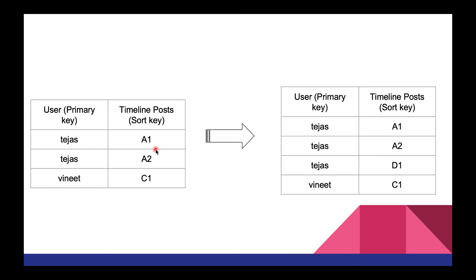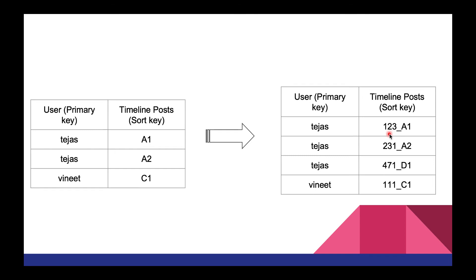We can simplify and modify our data schema. Instead of keeping every post ID in a single row, we use a sort key in DynamoDB. For every primary key, we can have multiple sort keys and sort based on them. Whenever we need to add another post for a user, all we do is add another row — much less costly. We can also add a timestamp in front of the post ID so we can sort posts by timestamp. Whenever a user asks for the latest post, we return the post with the highest timestamp, using a simple DynamoDB query.